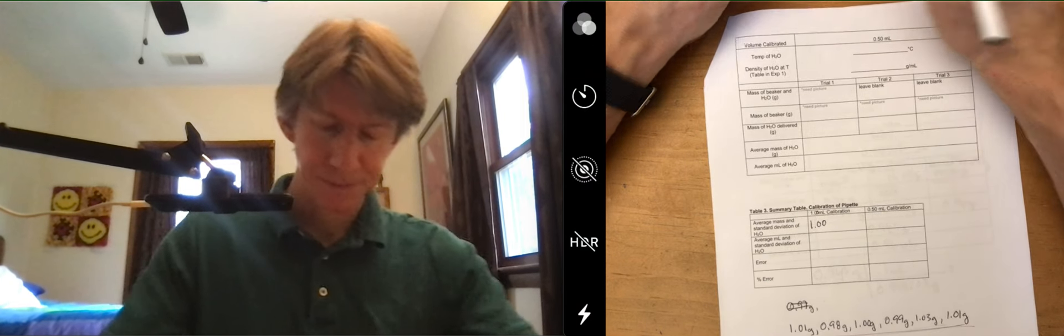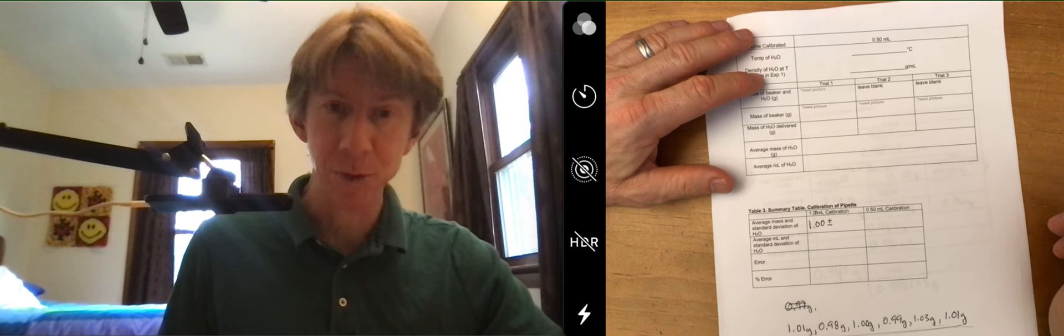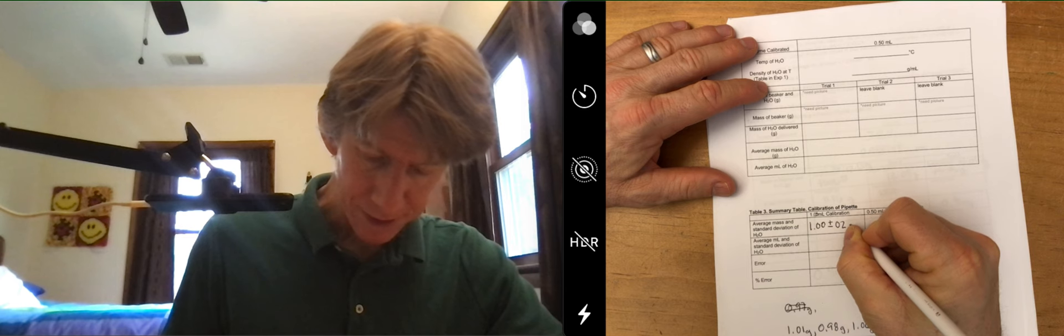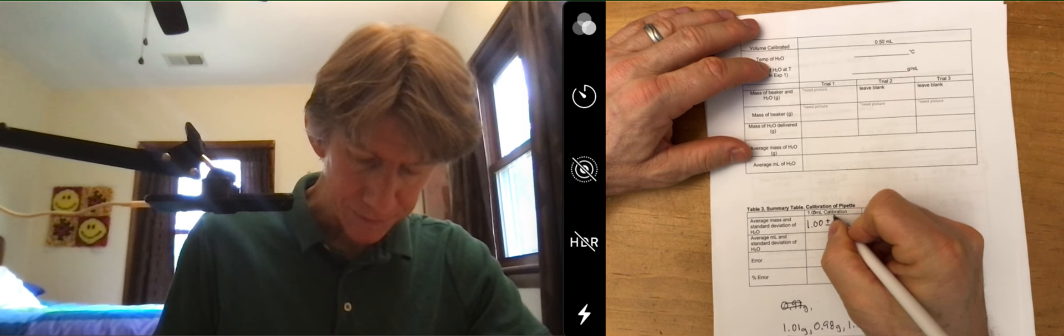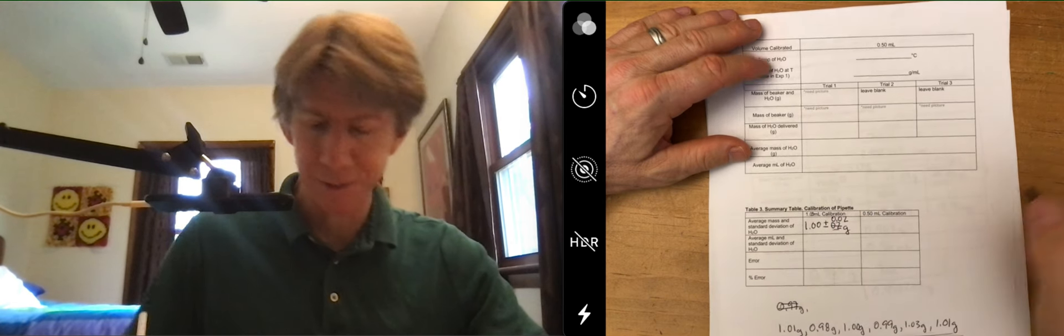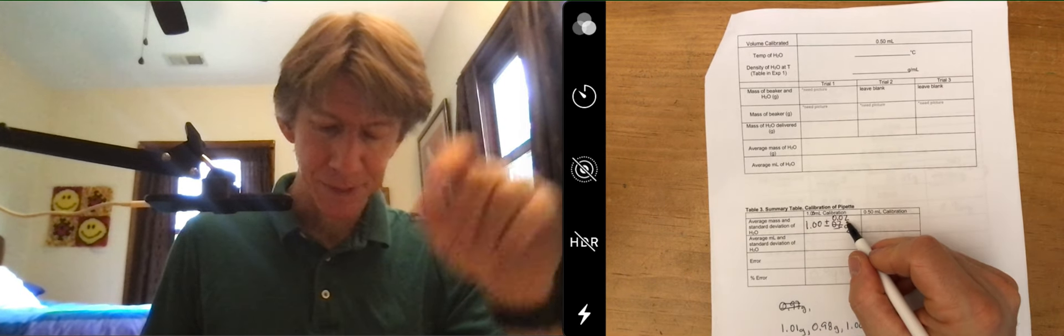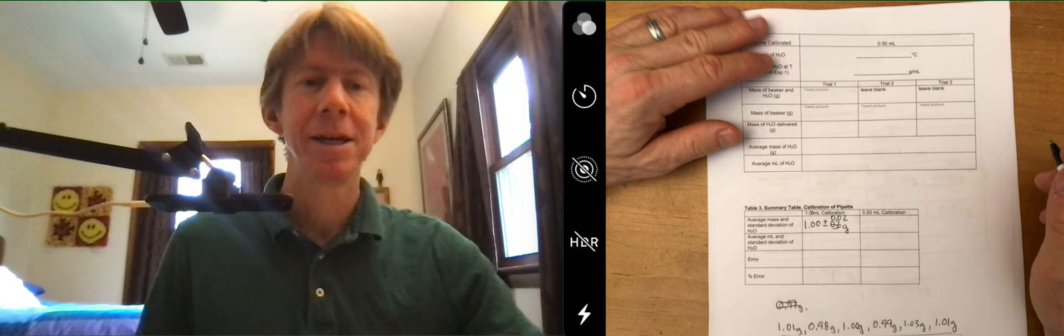Those are still close enough, doesn't have to be exactly one, mine worked out that way. And then I got 0.02 grams as my standard deviation. Remember standard deviations only have one sig fig which this one does, and the decimal point of the standard deviation matches the last decimal point of my number.